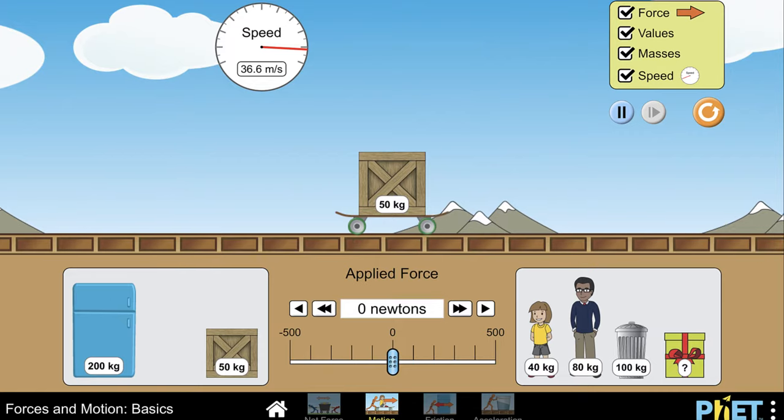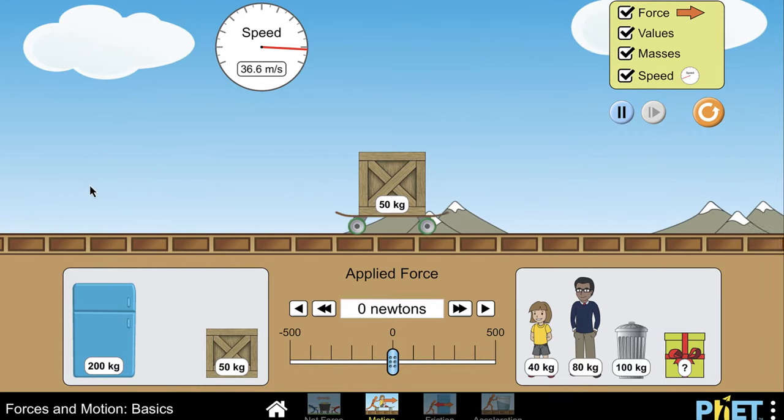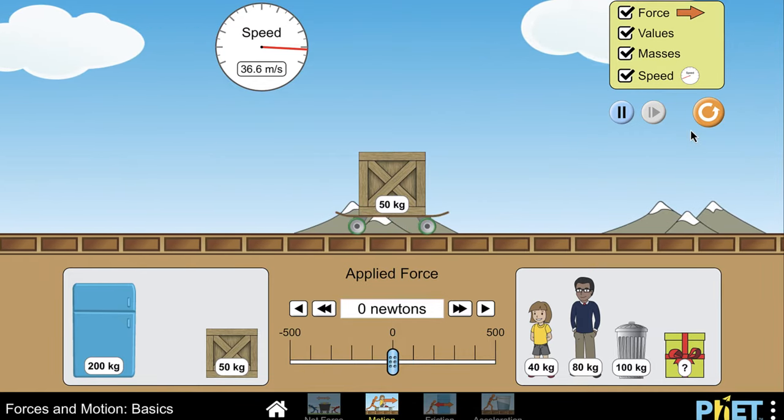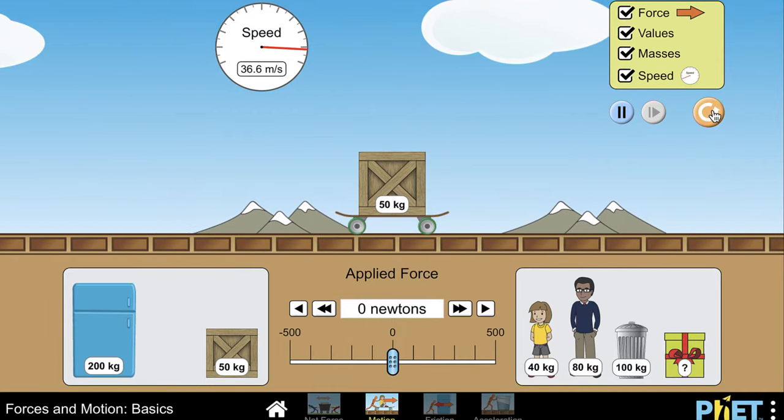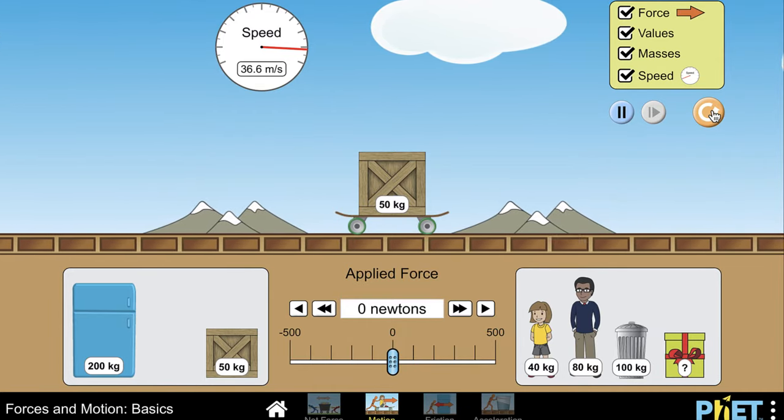Now that's because we're ignoring friction in this. We will look at friction in the next section. But this will keep moving. Otherwise, just as if it were in space, it will keep moving in the same direction at a constant speed forever, as Newton tells us in his first law.